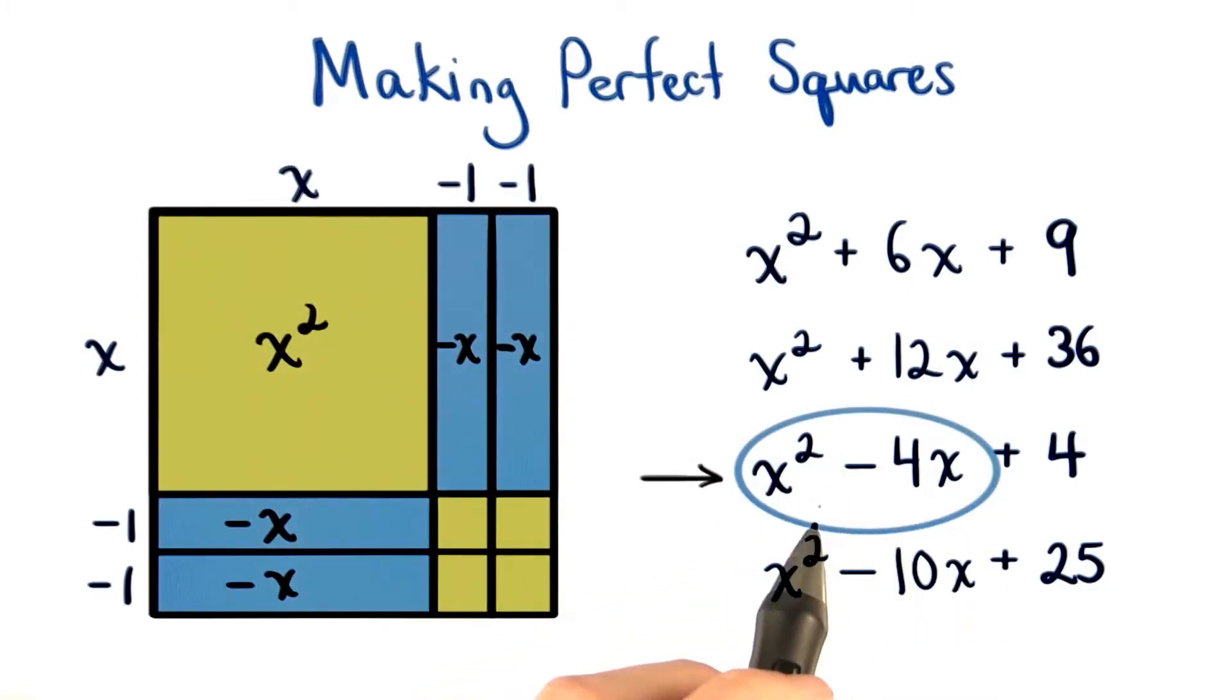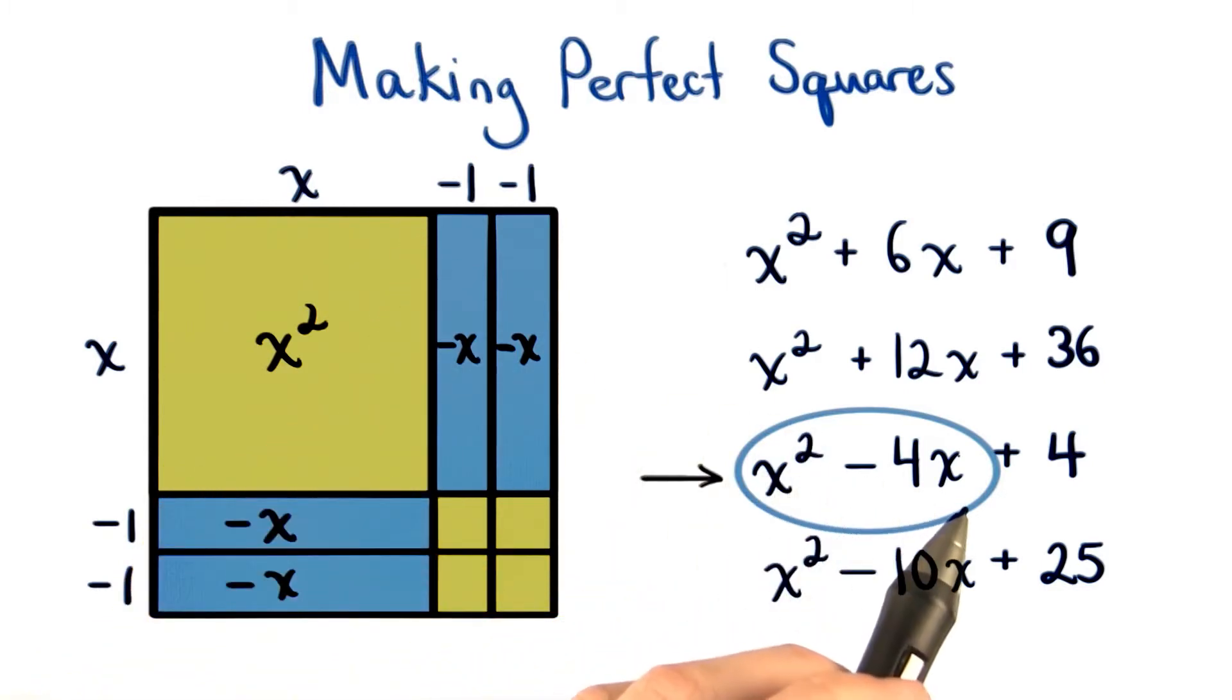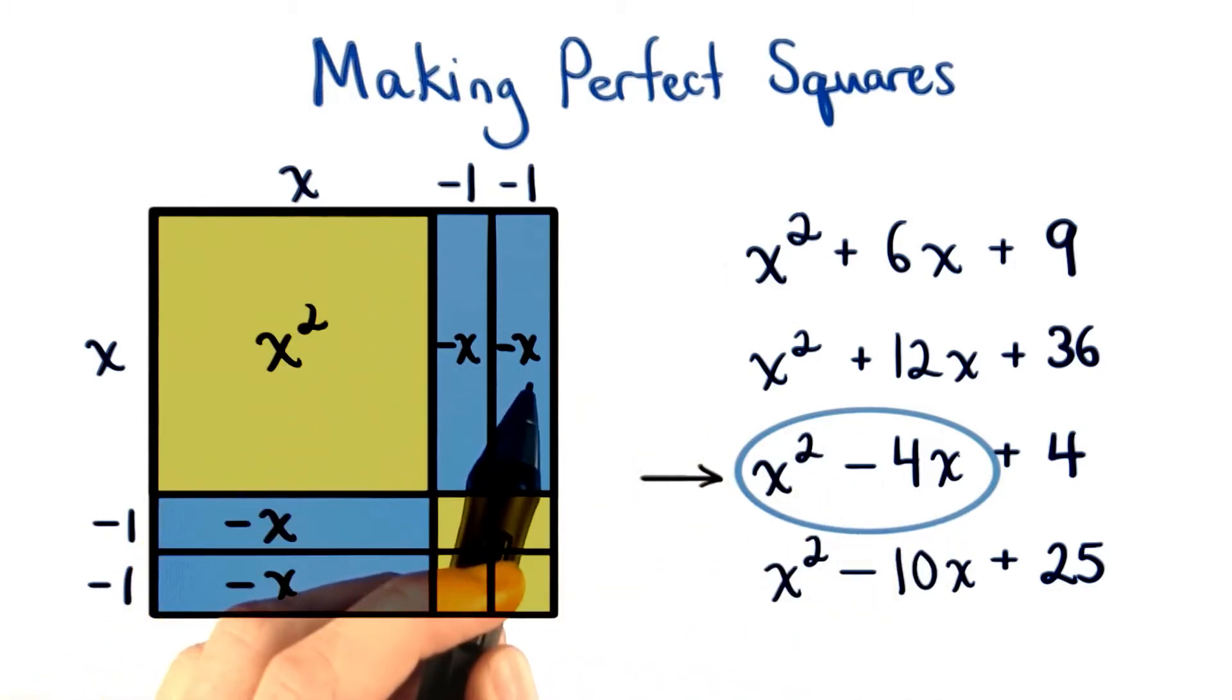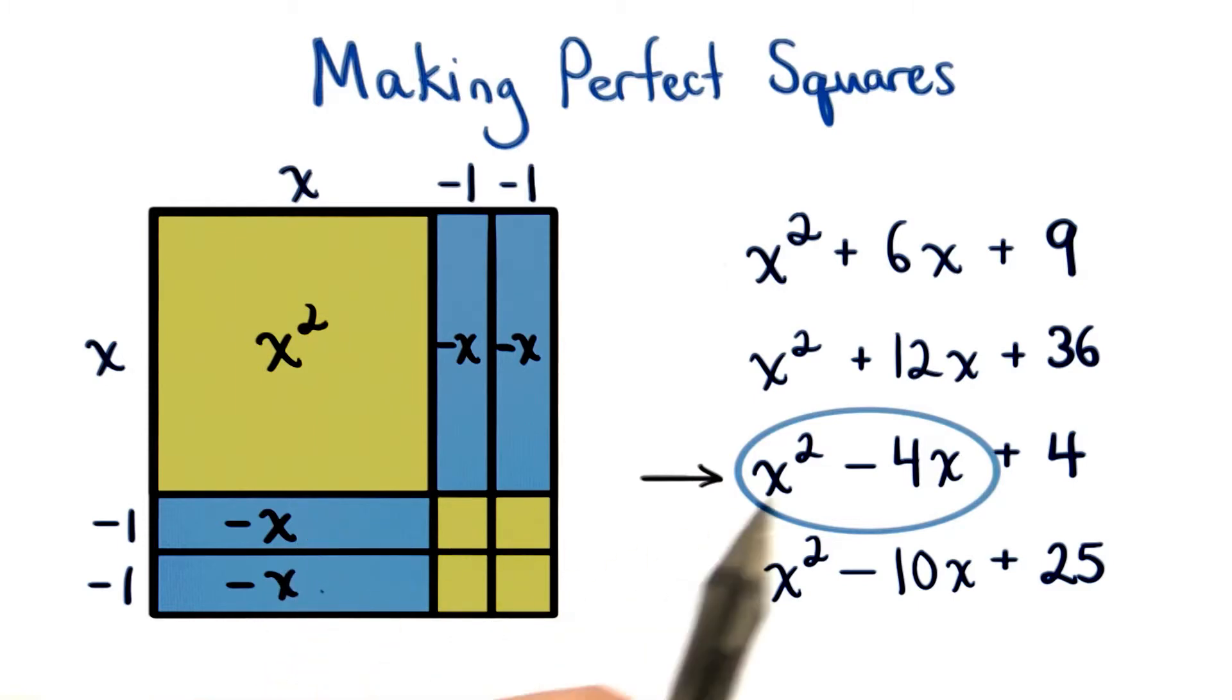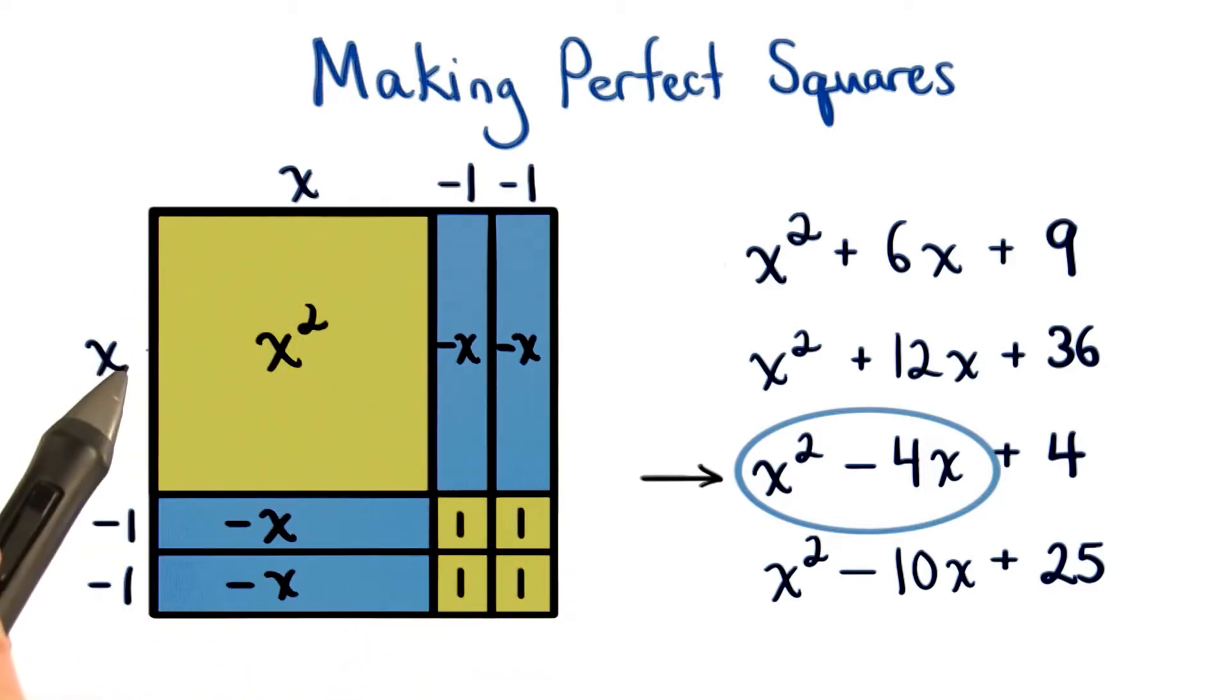For this third polynomial, we said we had negative 4x here. So we'll have our x squared like before, and then we'll have negative 4x's. So negative 2x and negative 2x, which makes negative 4x. So if we were to lay out these tiles, we could see that we would need to add four more one pieces to complete the square.